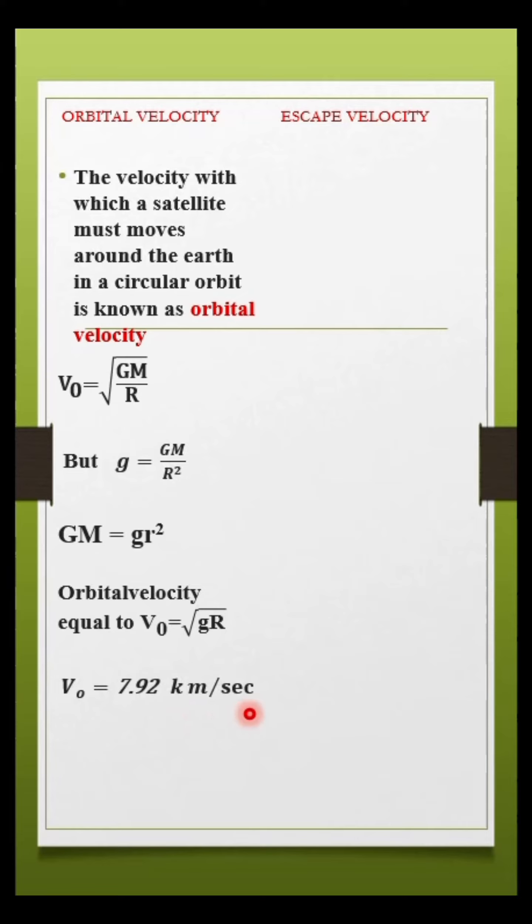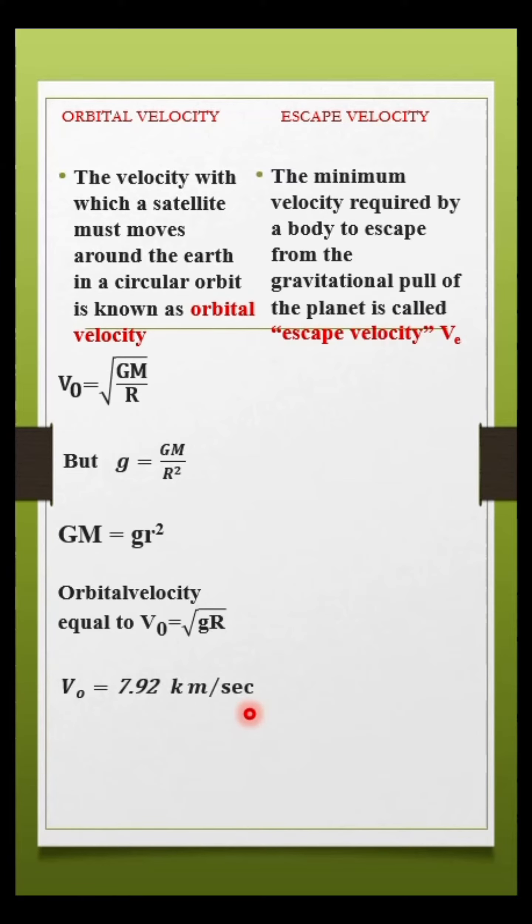Escape velocity is the minimum velocity required by a body to escape from the gravitational pull of the planet. The formula is vₑ = √(2GM/R).